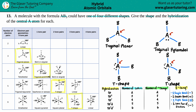For the central atom A in the first shape, I see one single bond — that's one thing — another single bond — two things — and another single bond — three things — with no lone pairs. So I have a total of three things, which means three letters. The hybridization is sp2.